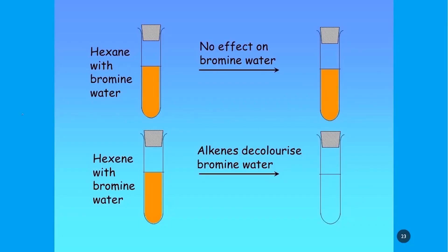The reaction of halides with alkenes is used to detect the presence of unsaturated compounds. If bromine water is used with alkanes, nothing happens. But if alkenes such as hexene are used with bromine water, the color disappears. This disappearance of the bromine water color indicates the presence of a double bond.